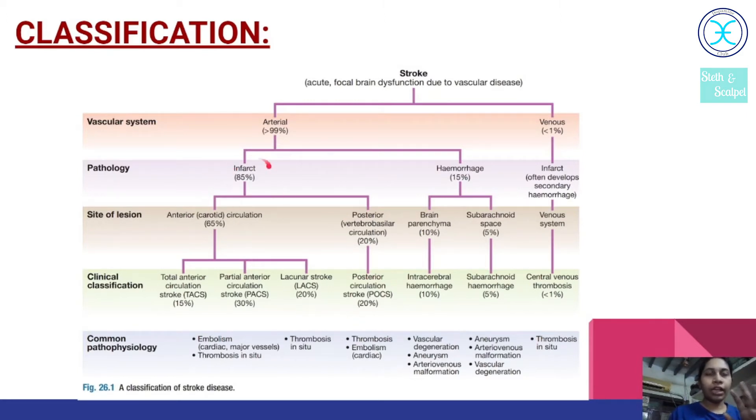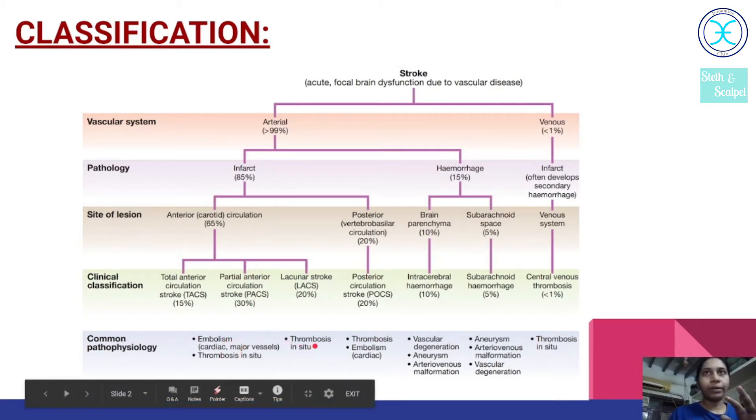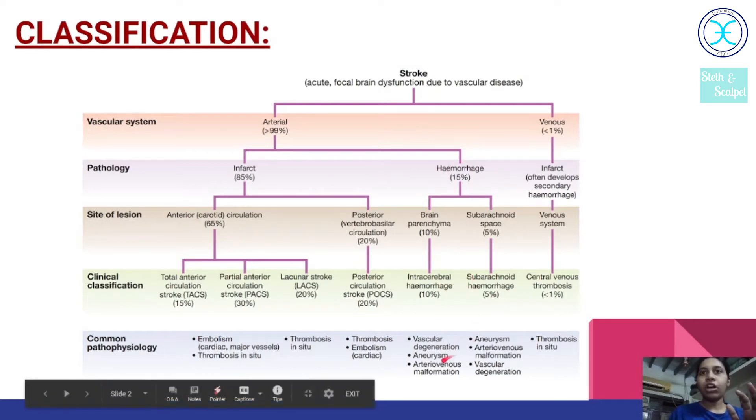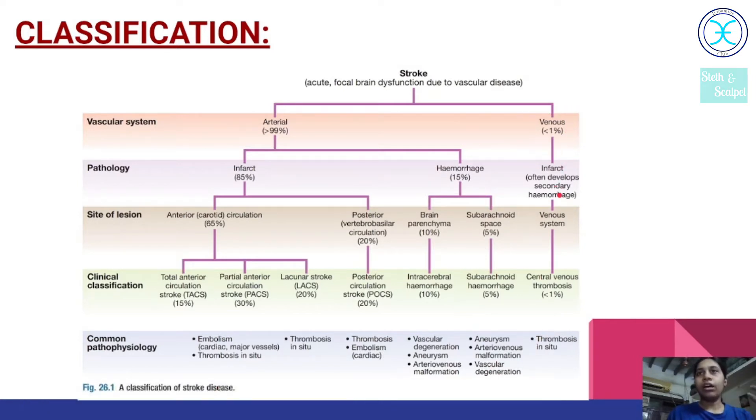The etiology behind the whole of the infarct type of stroke is either an emboli or a thrombi. Now let us see the hemorrhagic type of stroke. It causes either an intracerebral or a subarachnoid hemorrhage. Here, the basic etiology involved is hypertension, and the other causes can be aneurysm rupture or an AV malformation or vascular degeneration. Less than 1% is a venous type of stroke. It occurs due to secondary hemorrhage and causes a central venous thrombosis.